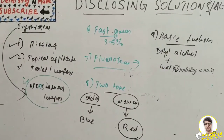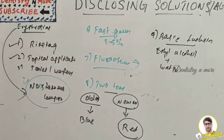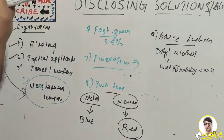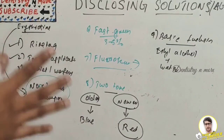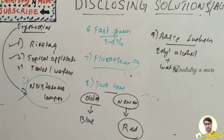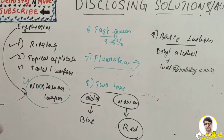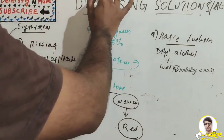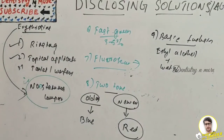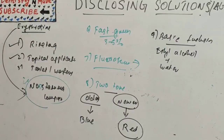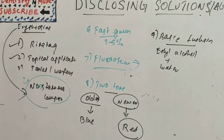That covers the various types of disclosing solutions. This topic will never be asked as a long essay — mostly it will be a short essay or short note, sometimes just erythrosin or two-tone dye as a short note. You need to write about what disclosing solution is, what is plaque, why we need disclosing solutions, and explain application and properties of the particular agent. Ultimately, disclosing means revealing the plaque — because plaque is invisible, to reveal it, to disclose it, we use these disclosing agents. I will come up with a new topic in Dentistry and More. Thank you.